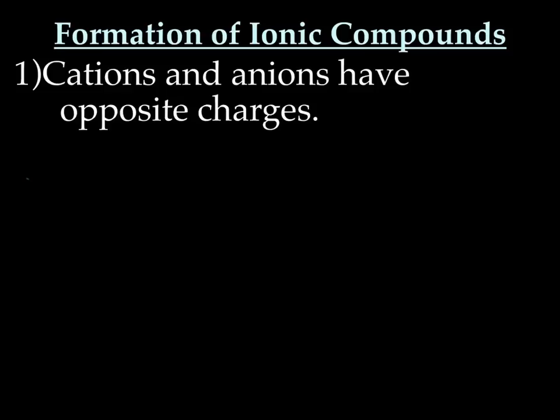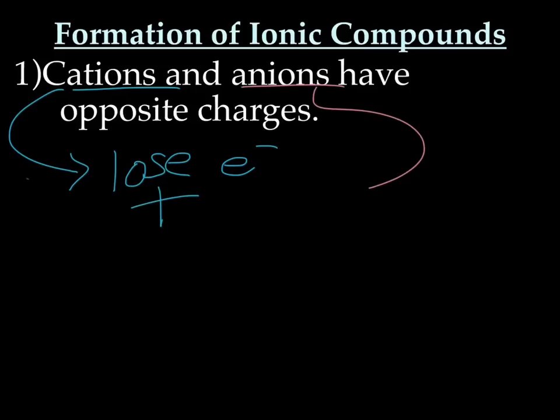A quick review about formation of ionic compounds. Cations and anions have opposite charges. Cations, if you remember, become ions by losing electrons, which gives them a positive charge. Anions become ions by gaining electrons, so they end up with a negative charge. Now, positives and negatives attract. They really like each other.